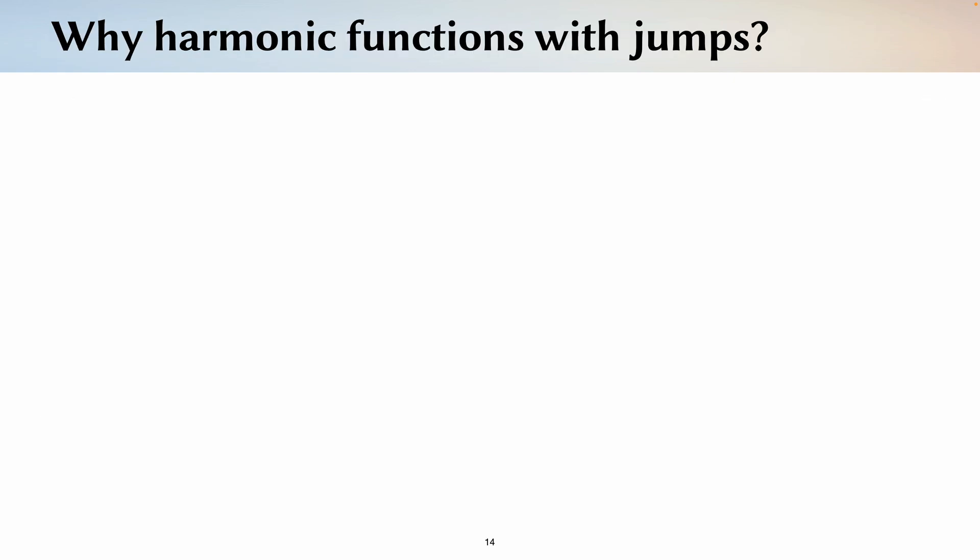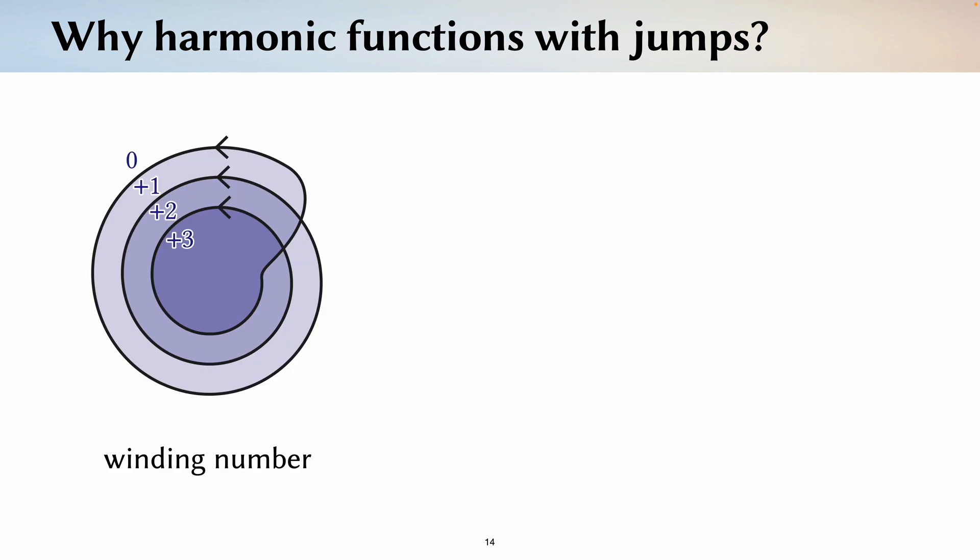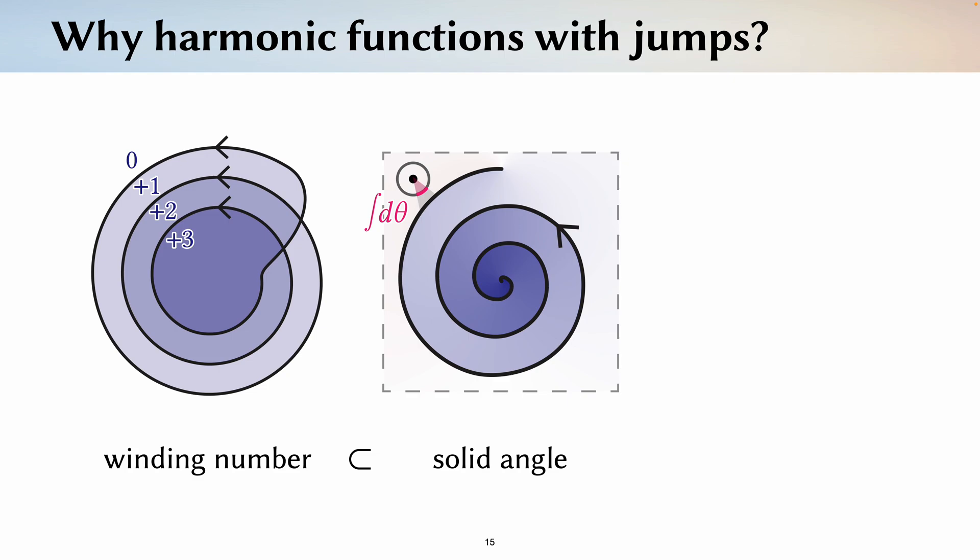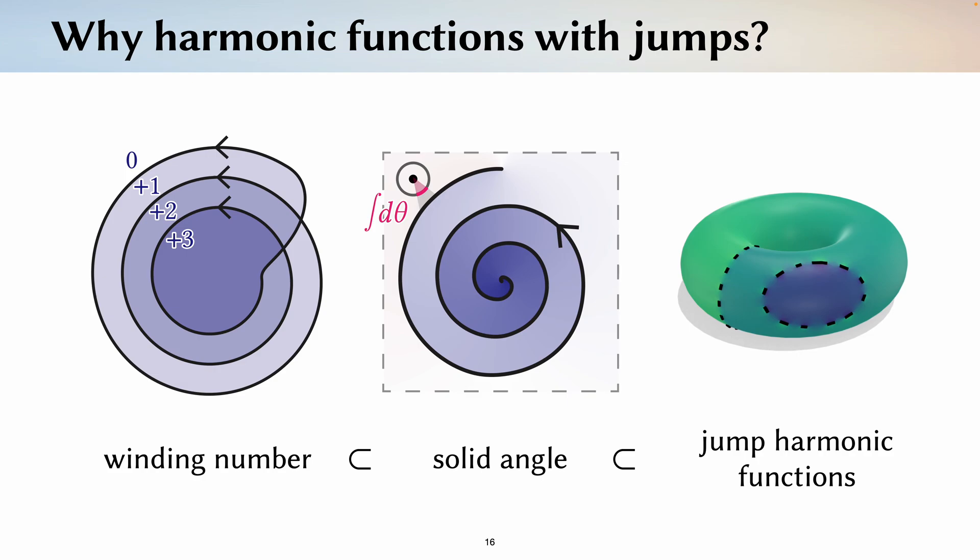So in the first step, why do we consider harmonic functions with jumps? Well, in the plane, winding number is a piecewise constant function that jumps by one every time we cross the curve from the right. But this definition only applies to closed curves, so for broken curves we have to consider the more general solid angle function. Solid angle is in turn not well defined on surface domains, so on surfaces we have to consider the broader class of harmonic functions with jumps, or jump harmonic functions for short.